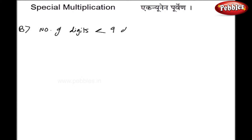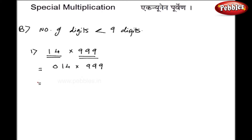Another case is where the number of digits are less than the number of digits in the multiplier. Suppose we have 14 multiplied by 999 — we have only 2 digits here but 3 digits in the multiplier. The method is exactly the same and simple. I will just write 14 as 014 to match the number of digits. Now I subtract 1 from 014, giving 013, and I subtract 013 from 999. My final answer is 013986.